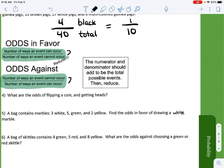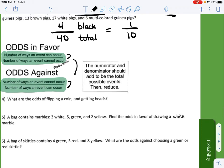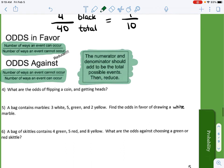Notice these are just like reciprocals of each other. The numerator and denominator should add to the total possible events, then reduce. So keep this in mind too. We must reduce this and the numerator and denominator must add to how many possible events there are.